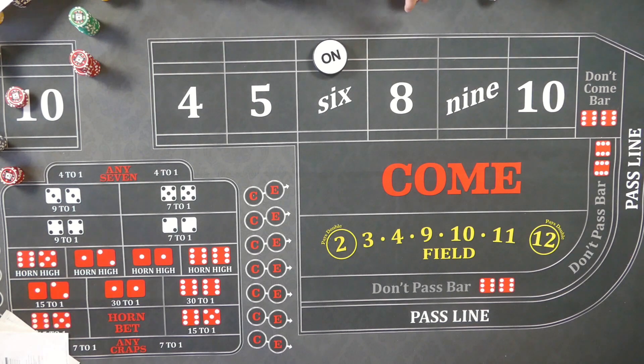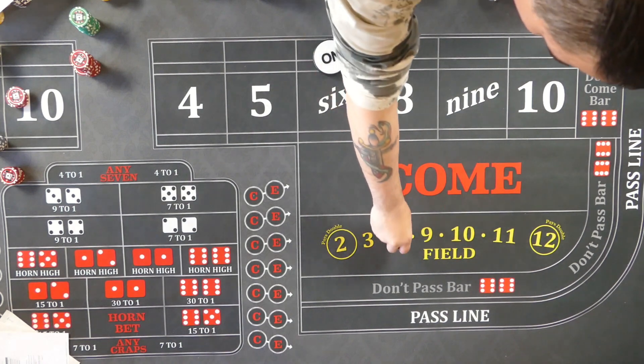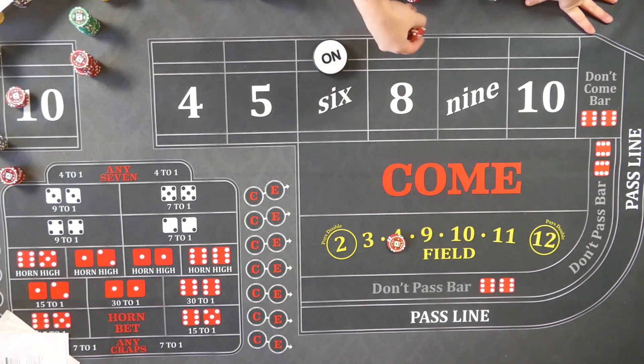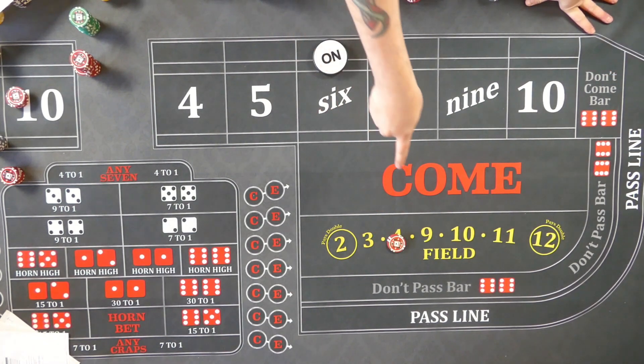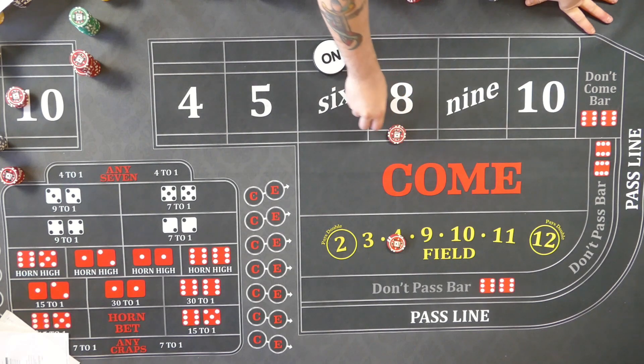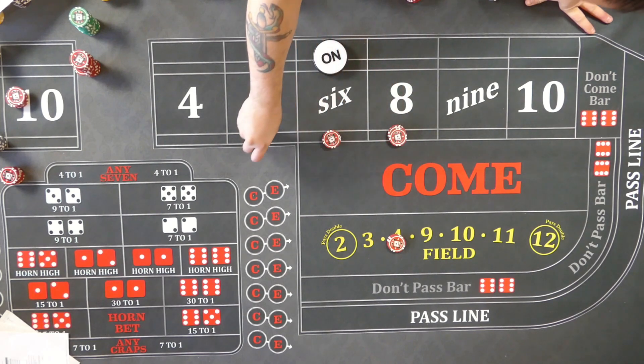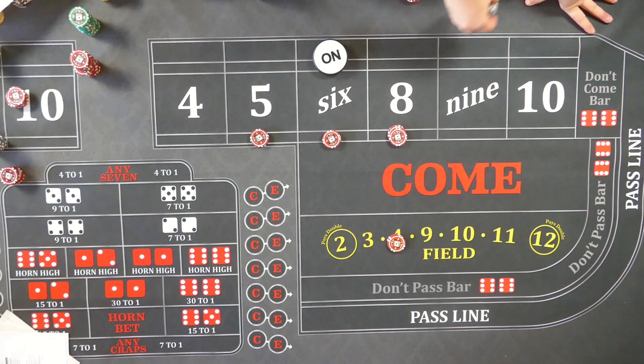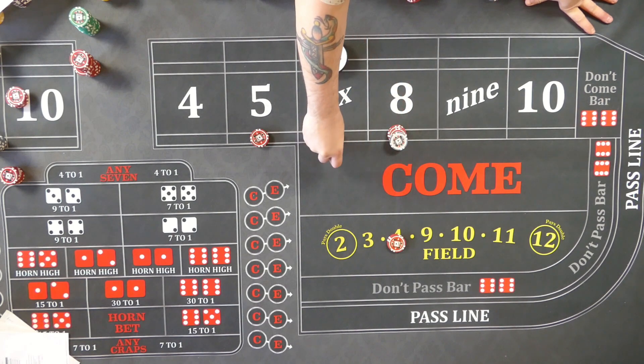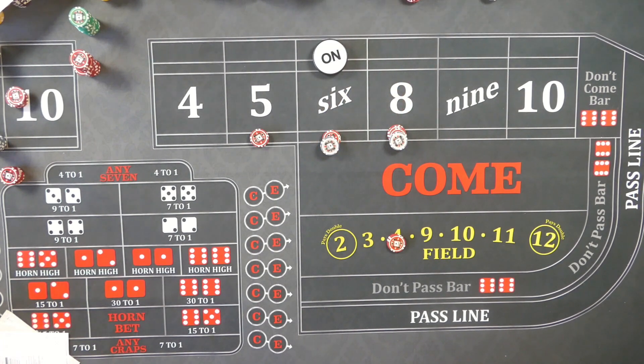If you're at a ten dollar table, then a true proper iron cross you'd be looking at ten dollars on the field, then you'd be looking at eighteen on the six, eighteen on the eight, fifteen on the five. You always have to be higher units on your place bets, otherwise it's an improper iron cross and it gets even worse, even worse than the normal iron cross.